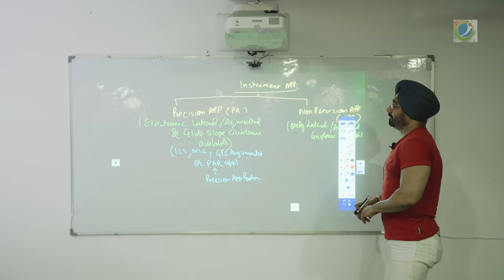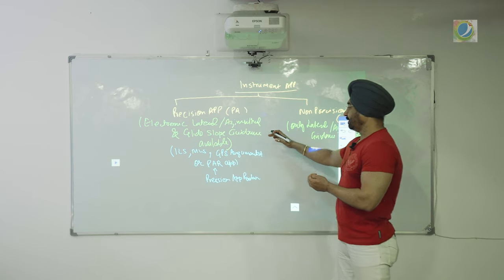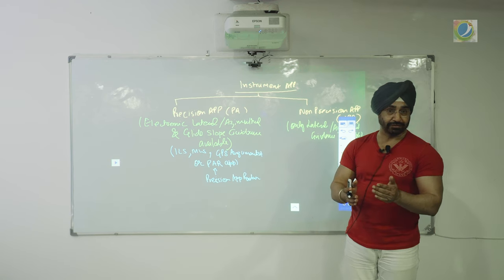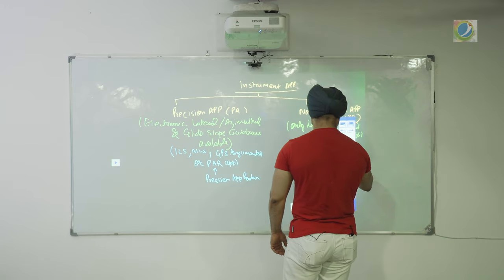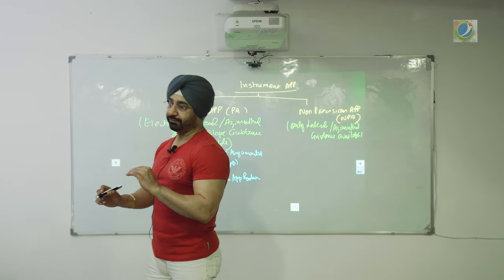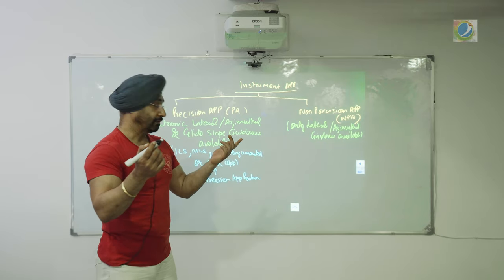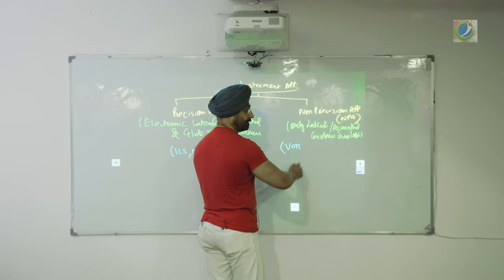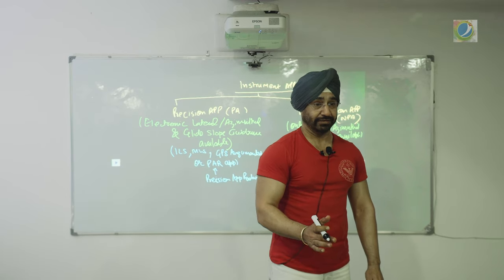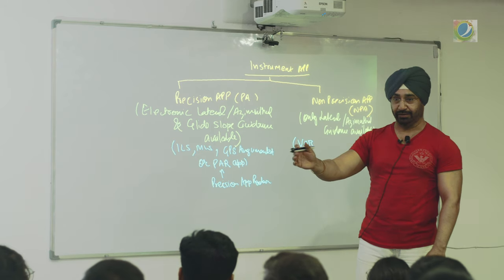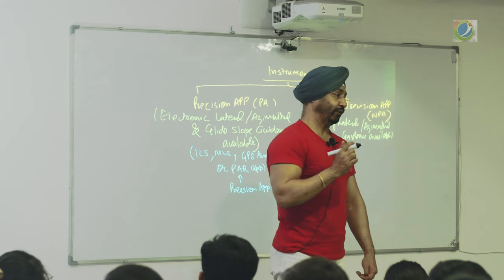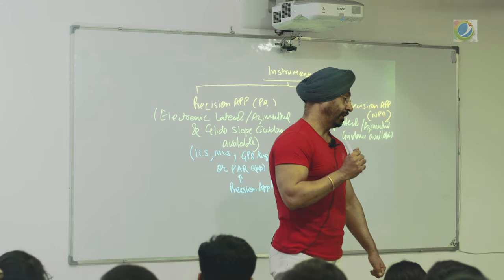When you talk about instrument approach, in precision approach you have both electronic lateral and vertical guidance. The controller has an electronic glide slope. When you do ILS, you can see your glide slope and localizer — both available. Non-precision approach only gives you alignment with the centre line. With VOR, you set your OBS, fly left or right, and it takes you down to the runway centre line — but it will only give you lateral or azimuthal guidance.